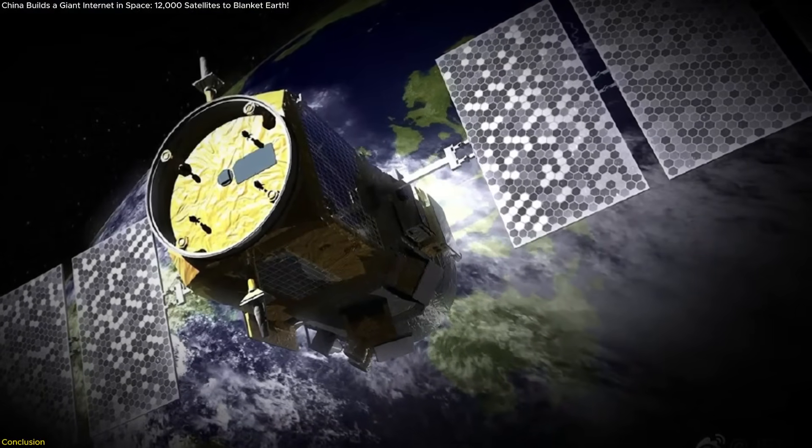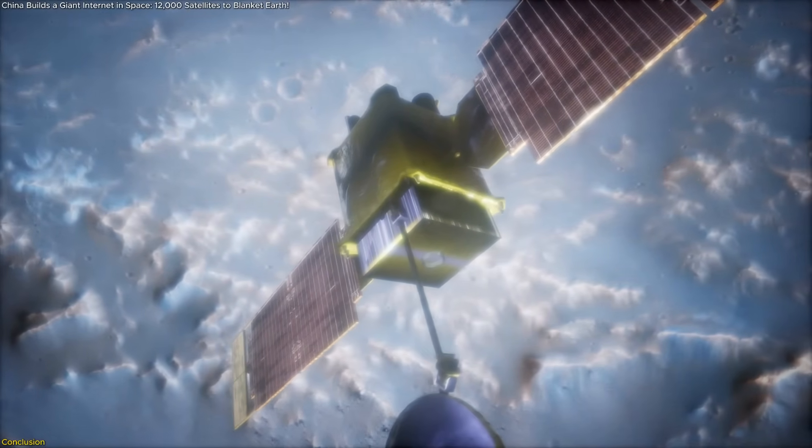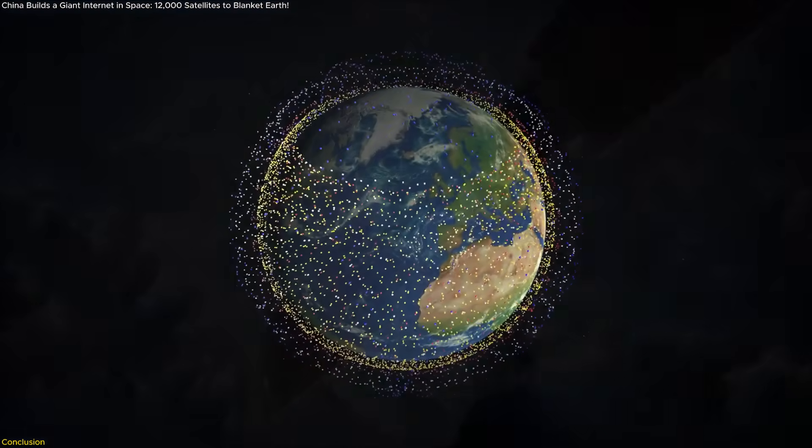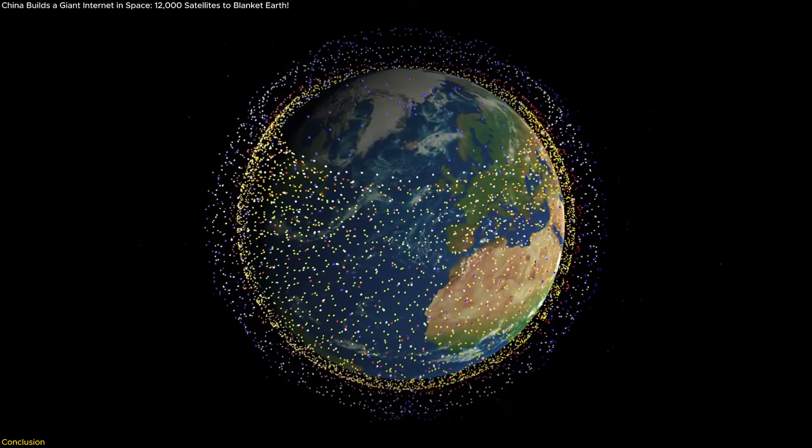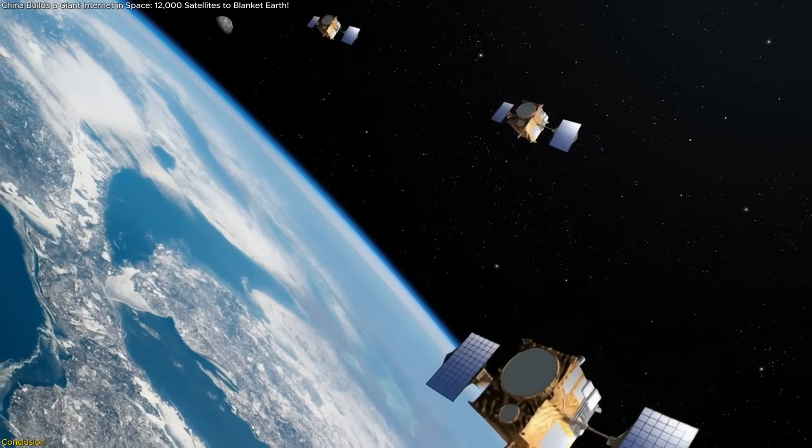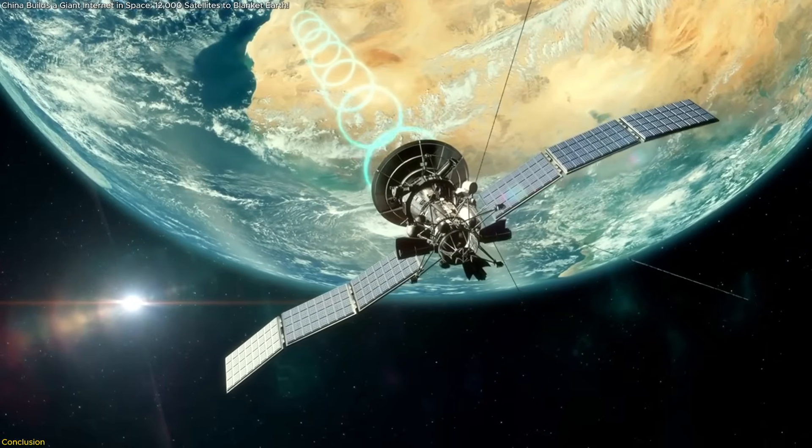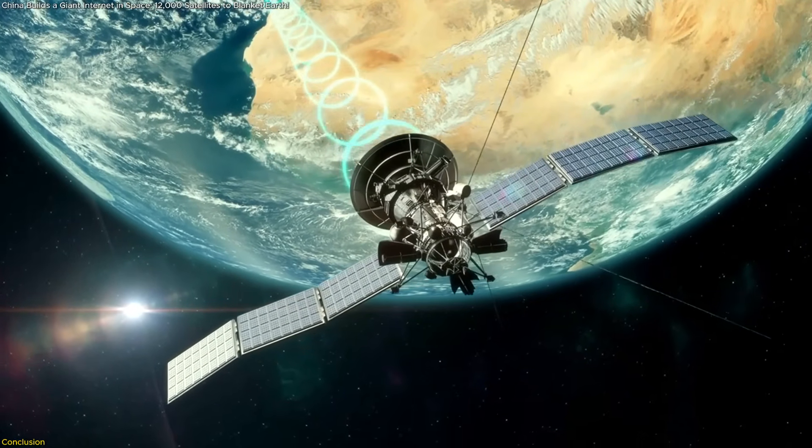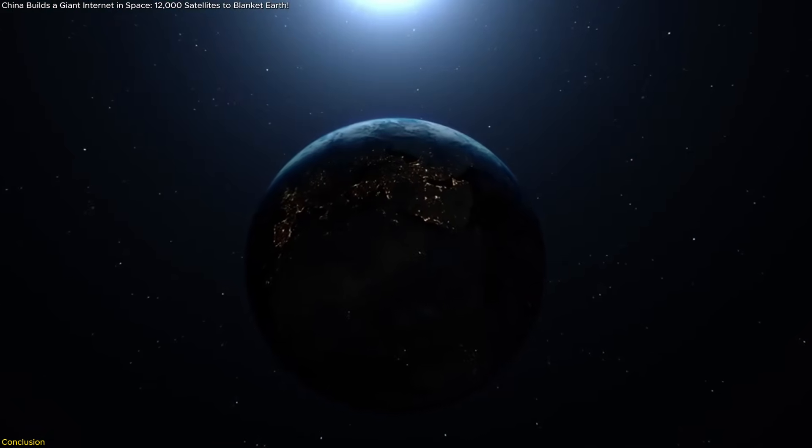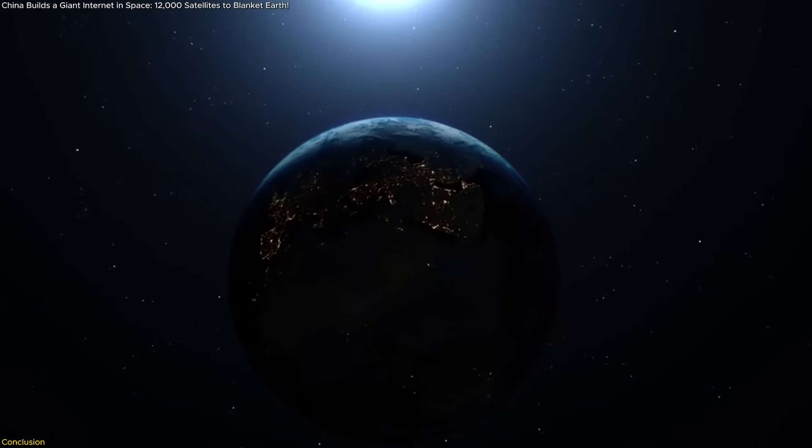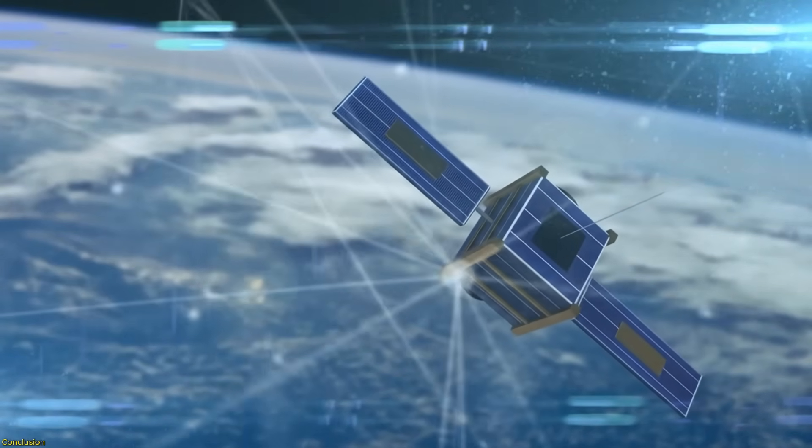China's Guang satellite network is more than a tech project. It's a bold move to reshape the global internet landscape from orbit. With thousands of satellites planned, strategic goals in play, and competition heating up, Guang represents a new chapter in space-based communication. Whether it becomes a global alternative or a state-driven network with selective reach remains to be seen. But one thing is certain: the race for the skies is no longer science fiction. It's real, it's accelerating, and it's going to shape how billions connect in the decades to come.